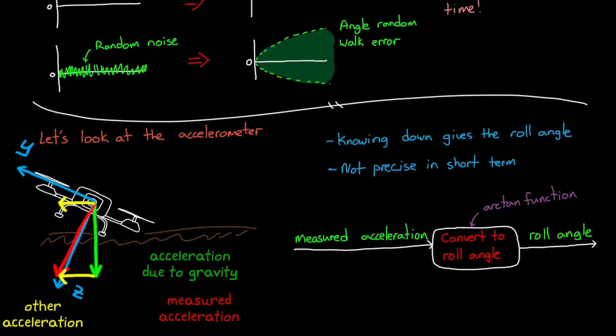For these reasons, it's hard to rely solely on the accelerometer for short duration, very quick roll measurements. But the accelerometer is very stable long term, because the gravity vector doesn't change over time.